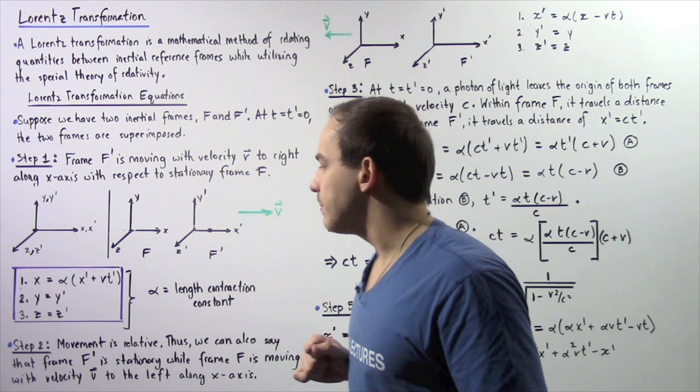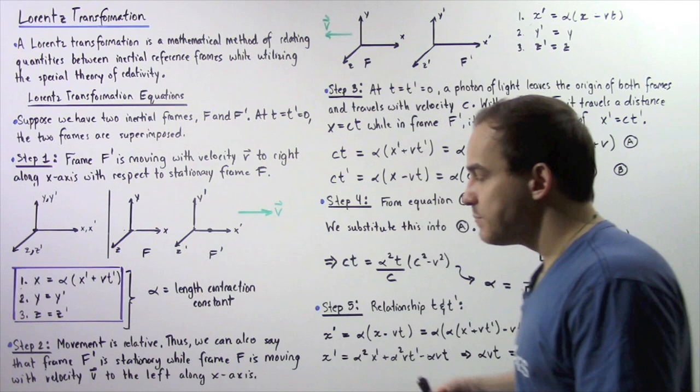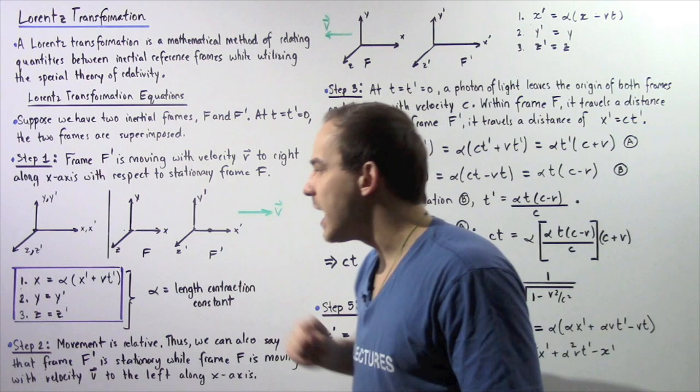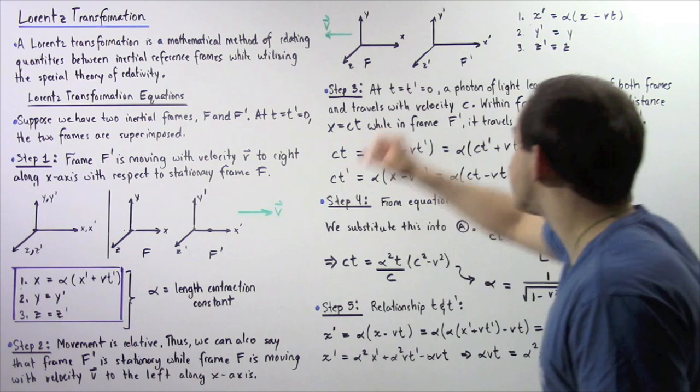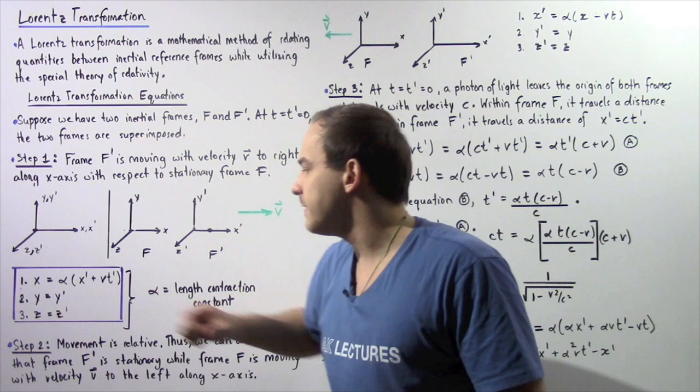So if we know x prime, y prime, and z prime, we can calculate x, y, and z. However, alpha is an unknown constant, and in the next several steps we're going to attempt to find what this constant alpha is.